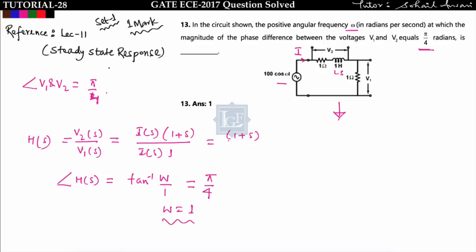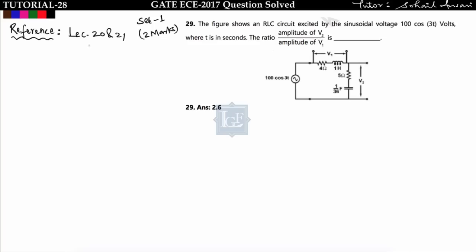The angle of H(s) is the phase difference between V2 and V1, which is given as pi by 4. So omega equals 1. This concept has been discussed in steady state response, that is lecture number 11.